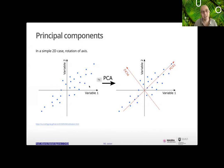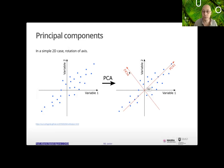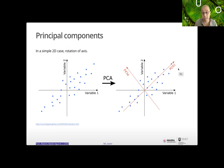A simple illustration: suppose you have data with two variables following a linear trend in an ellipse shape. You rotate your axes so principal component 1 aligns with the direction of greatest variability, capturing most of the variance. Principal component 2 is orthogonal to PC1 and captures the next most variability. With PC1 you capture most of the variability and can use it as a single new variable for further analysis.